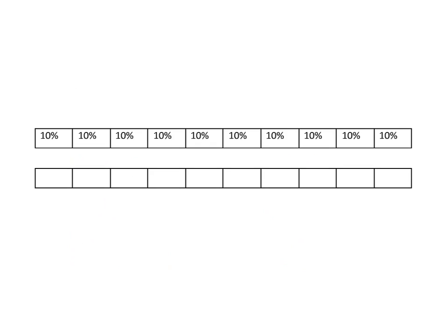Let's look at this picture — it should also help make clear how we worked that out. If I take 10% and count 1, 2, 3, 4, 5, 6, 7, 8, 9, 10 of them, that gets me to 100%. So I put all 10 lots of 10% together and I get to 100%. We were told that 10% of my class were girls, so 10% is four people. Each little group of 10% is four people, so the whole class is 10 lots of four, which gives me 40.